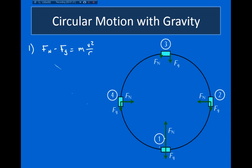Solving for the normal force, I see that the normal force is equal to the gravitational force plus mv²/r. So the normal force not only has to support this object against gravity, it also has to supply an additional force equal to mv²/r to cause the centripetal acceleration for this object.